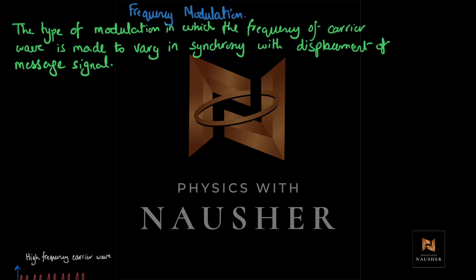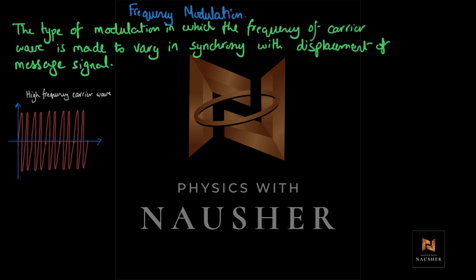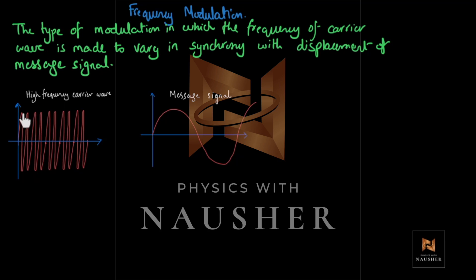You have the high frequency carrier wave and you have to alter it — to modulate it — to mold it according to your message signal. We previously discussed amplitude modulation, where the amplitude increases and decreases while the wave maintains its frequency. Here, we change the frequency instead. In frequency modulation, the amplitude does not change — amplitude will remain constant when talking of FM, whereas in AM the amplitude changes.